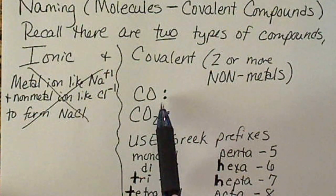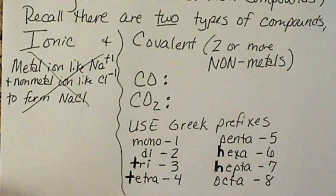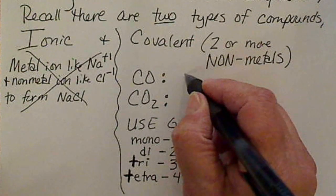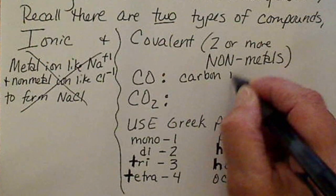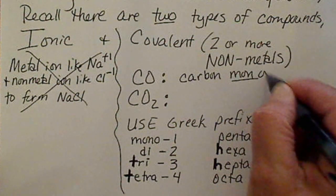To name this, we already basically know the name of CO. We're going to use the Greek prefix mono because there is one oxygen. So this is carbon monoxide.